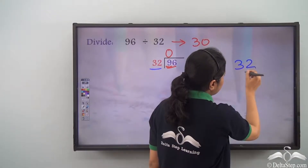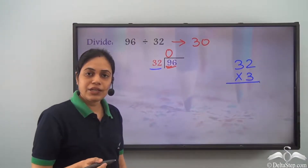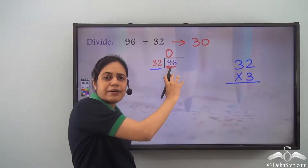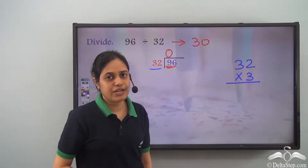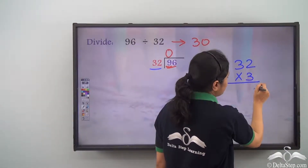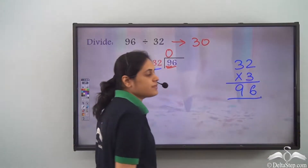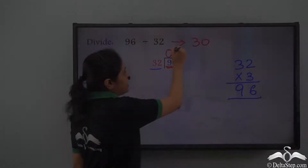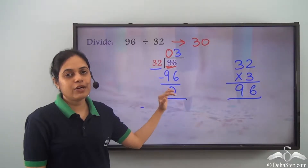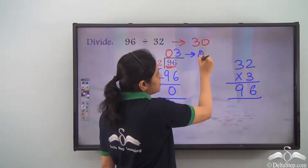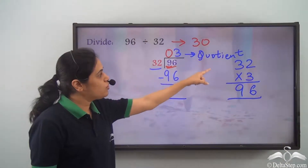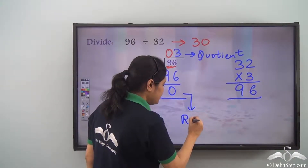I multiply 32 by 3 to check: 3 into 2 is 6, 3 into 3 is 9, giving 96. So 32 goes into 96 exactly 3 times. I write 3 as the quotient and 96 below, and the remainder is 0. So I stop here — the quotient is 3 and the remainder is 0.